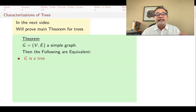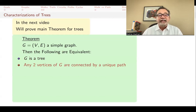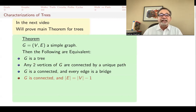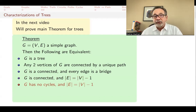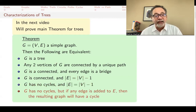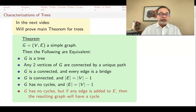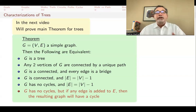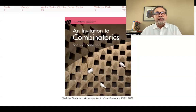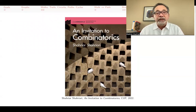That theorem will state that in a simple graph the following six statements are equivalent — if you know one, all are true; if one is false, all are false. The statements are: G is a tree (connected with no cycles); any two vertices are connected by a unique path; G is connected and every edge is a bridge; G is connected and |E| = |V| − 1; G has no cycles and |E| = |V| − 1; and G has no cycles but adding any edge to E creates a cycle. This is what we will cover in the next lecture, so see you there. If you'd like to see more videos like this, subscribe, like, and keep hydrated at all times.